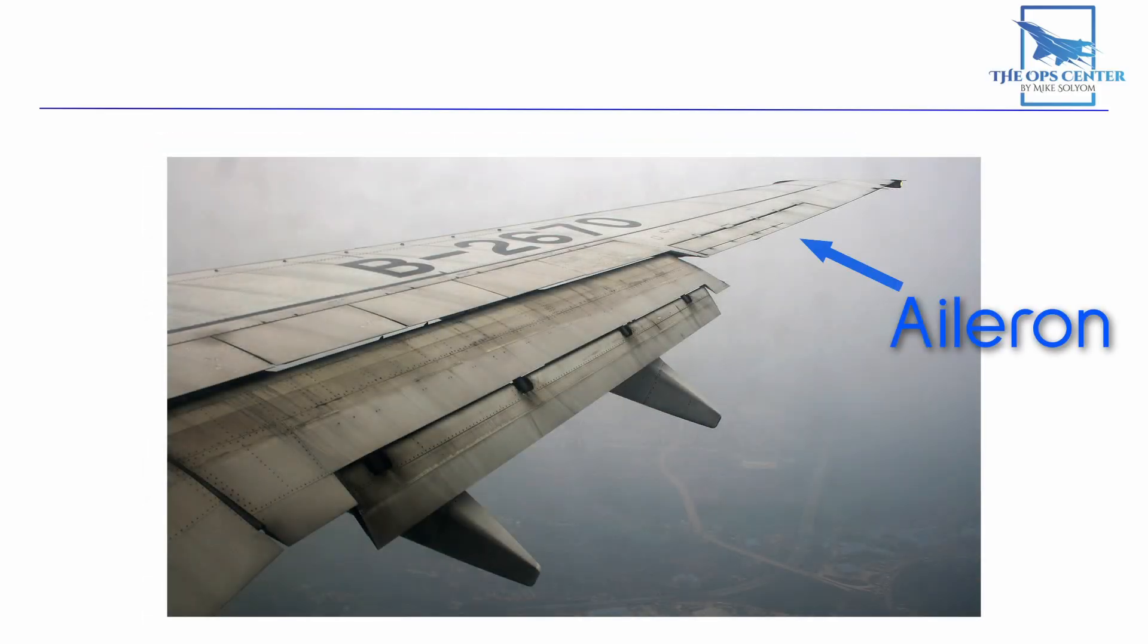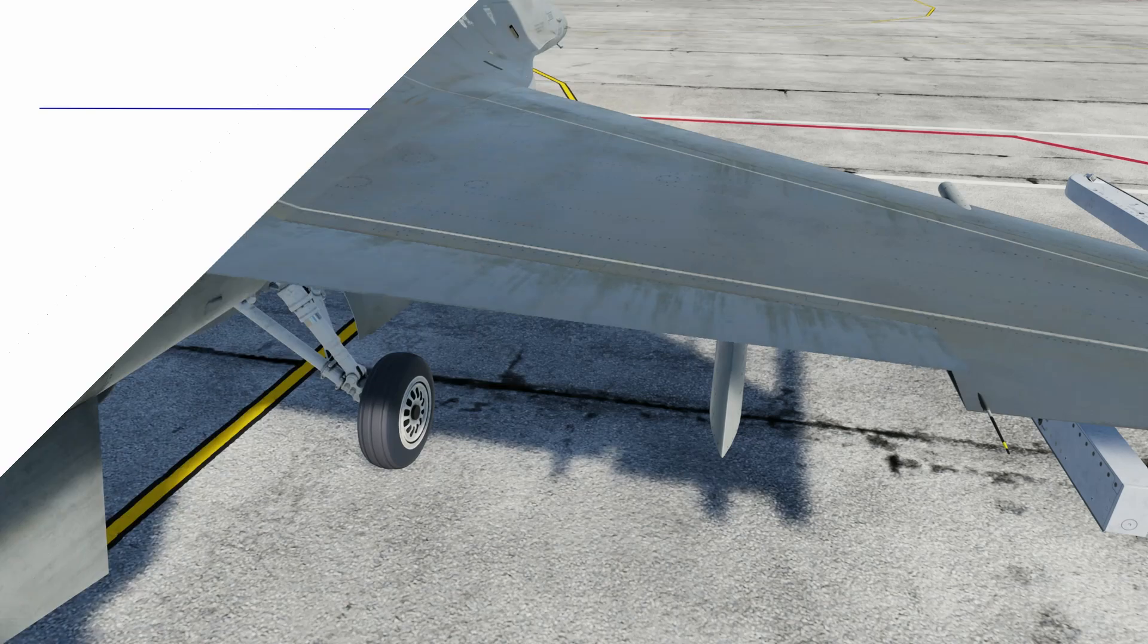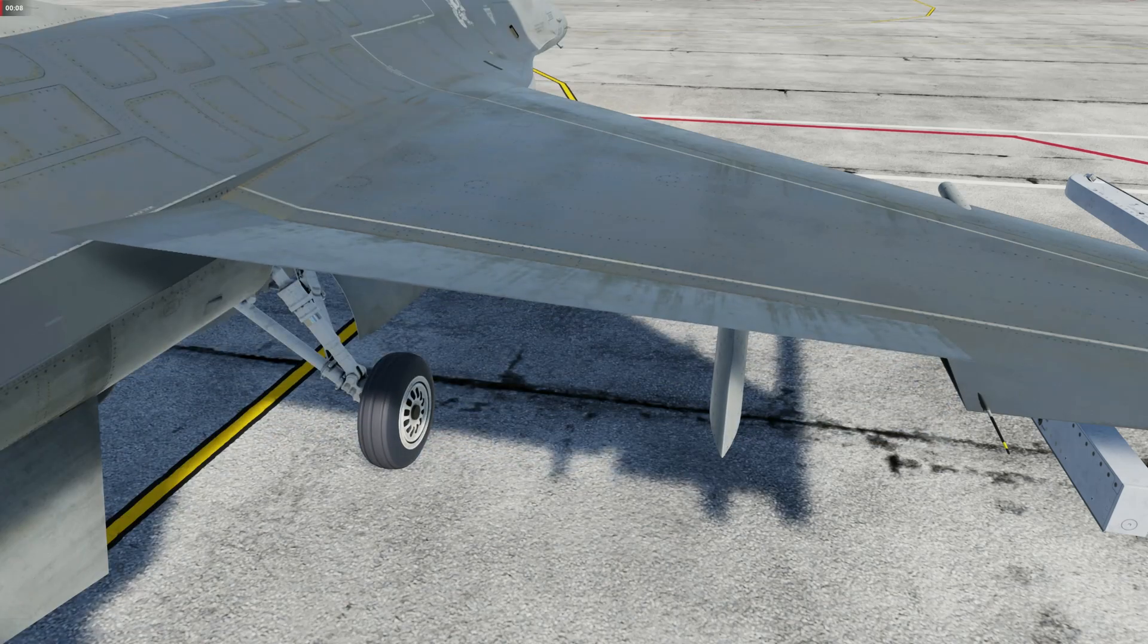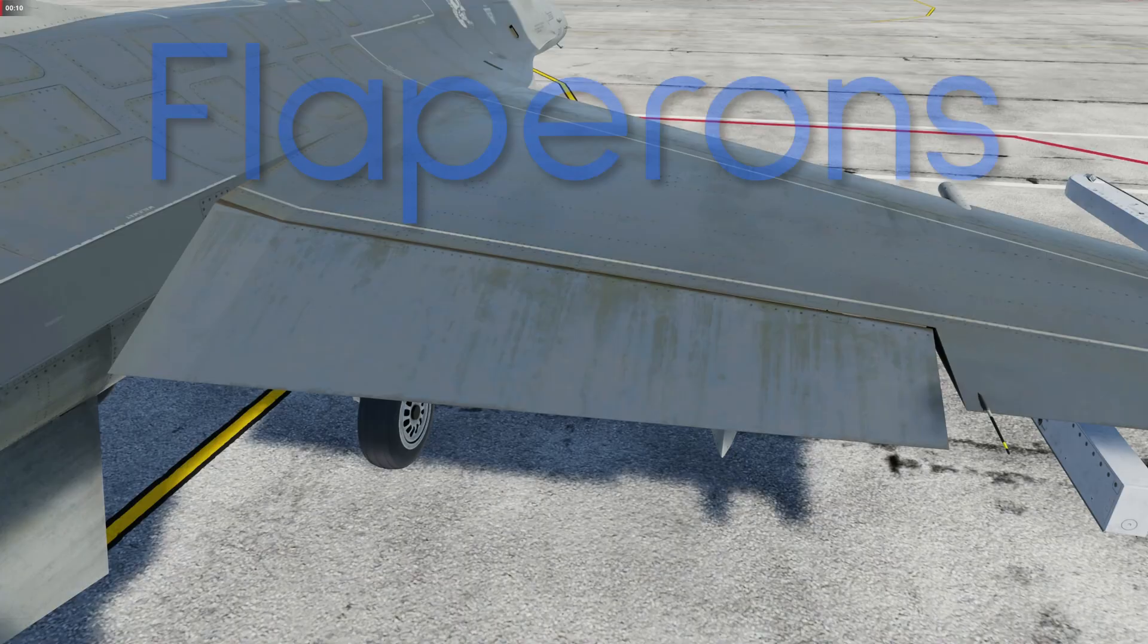Typically the ailerons are on the outer edge of the wings to take advantage of leverage. These are different than the flaps we used in the takeoff video which are usually located on the inner trailing edge of the wings. This is because the inner part of the wing typically generates the most lift, especially when the wing is tapered. Some aircraft use the same control surface for flaps and ailerons. When this happens, these control surfaces are known as flapperons.